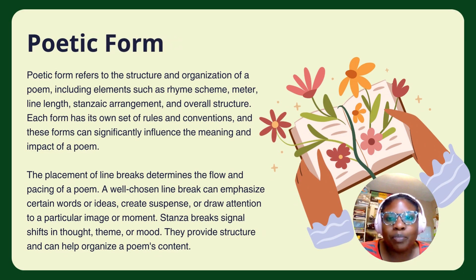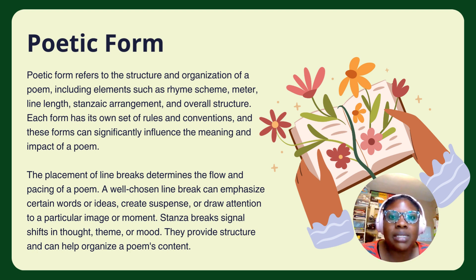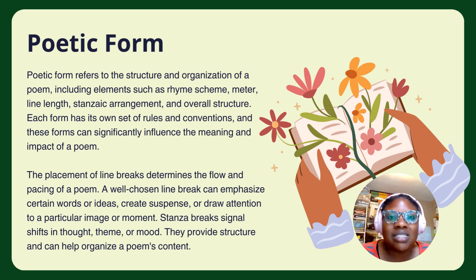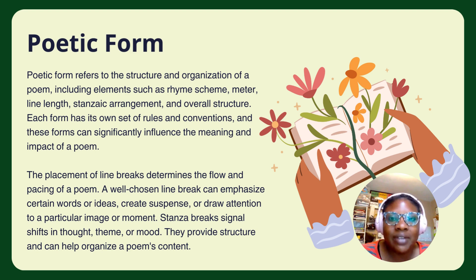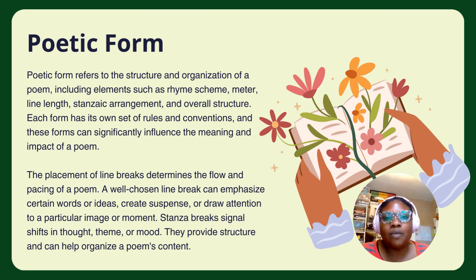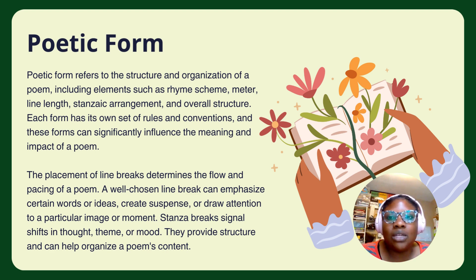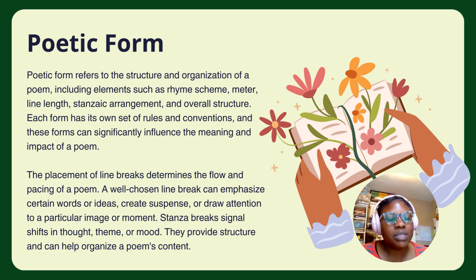Poetic form refers to the structure and organization of a poem, including elements such as rhyme scheme, meter, line length, stanza arrangement, and overall structure. Each form has its own set of rules and conventions, and these forms can significantly influence the meaning and impact of a poem. The placement of line breaks determines the flow and pacing of a poem. A well-chosen line break can emphasize certain words or ideas, create suspense, or draw attention to a particular image or moment. Stanza breaks signal shifts in thought, theme, or mood, and provide structure to help organize a poem's content.